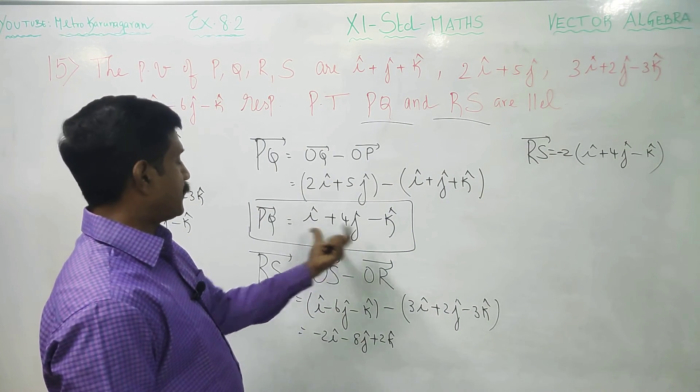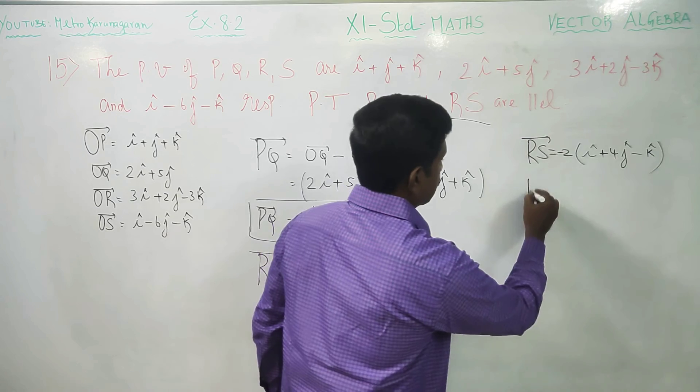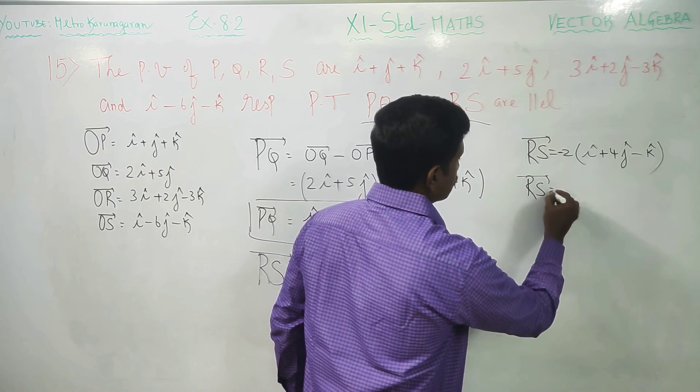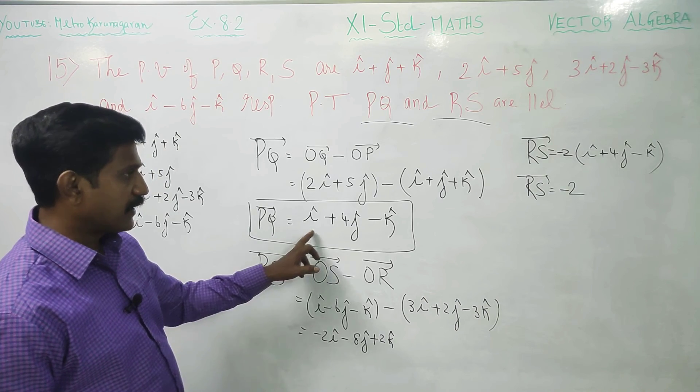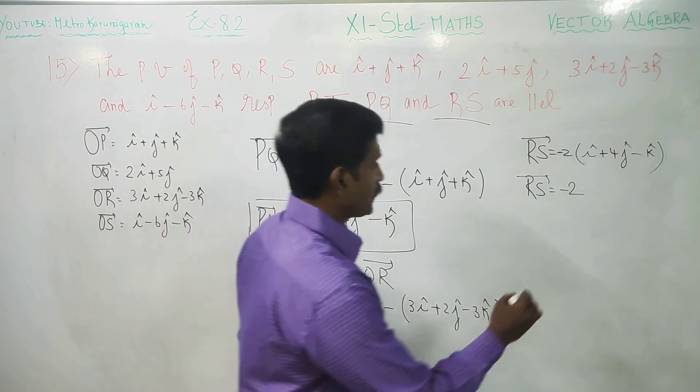We will take PQ vector. Now, RS vector is equal to minus 2 into, I have got PQ vector, I plus 4J minus K that is PQ vector.